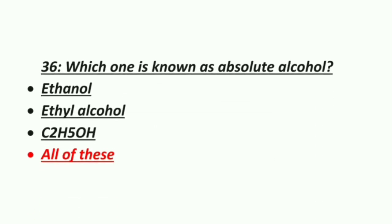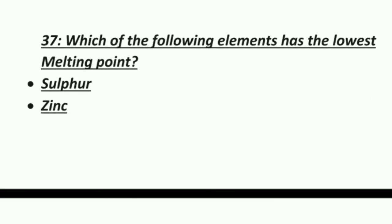Thirty-sixth MCQ: which one is known as absolute alcohol? Option 1: Ethanol, Option 2: Ethyl alcohol, Option 3: C₂H₅OH, Option 4: All of these. The correct answer is all of these — ethanol, ethyl alcohol, and C₂H₅OH are all known as absolute alcohol.